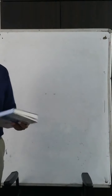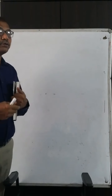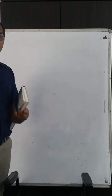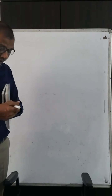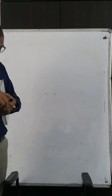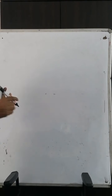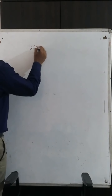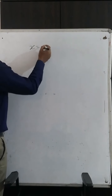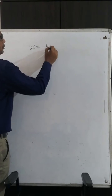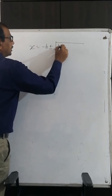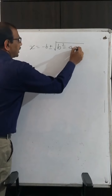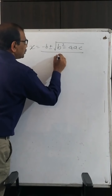In the last module, we saw how to solve a quadratic equation with the help of the formula method. The formula was: X is equal to minus B, plus or minus, under root of B squared minus 4AC, upon 2A.